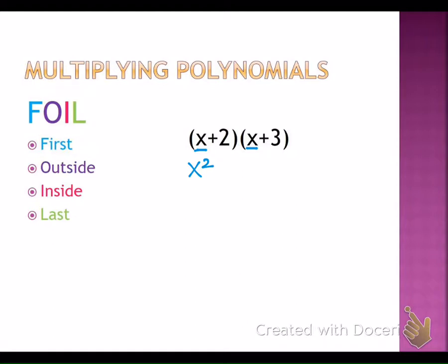The O stands for the outside terms. The outside terms of this problem are x and 3 — not necessarily outside the parentheses, but the outside terms of your problem. So x times 3 gives us positive 3x. I want you to always tell me positive 3x or plus 3x or minus 3x, because I'm writing down our answer and I need to know if it's a positive or a negative.